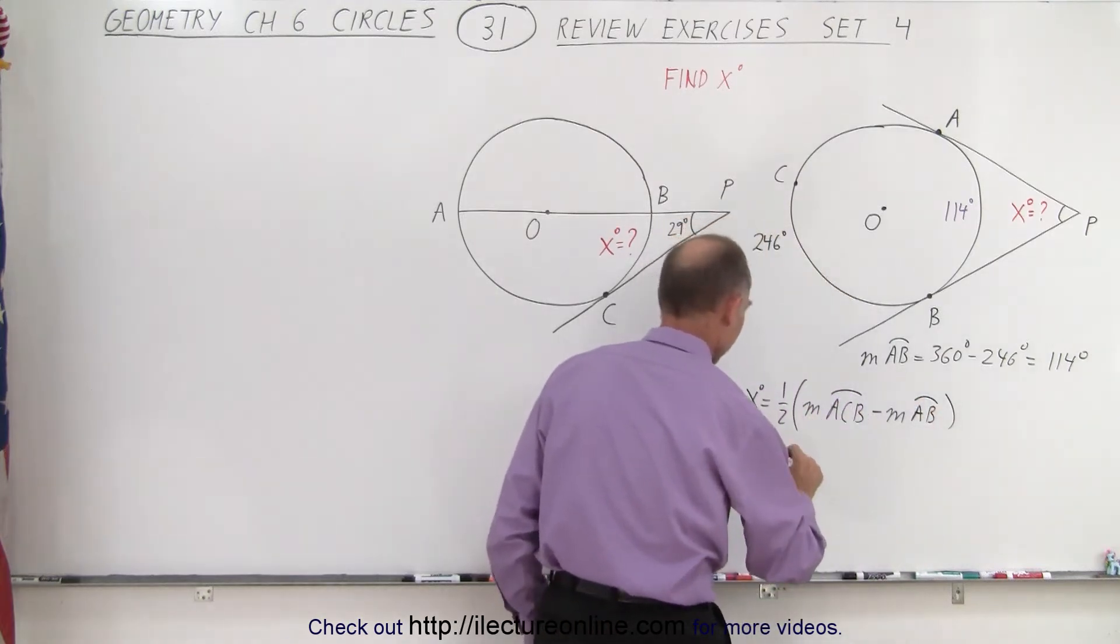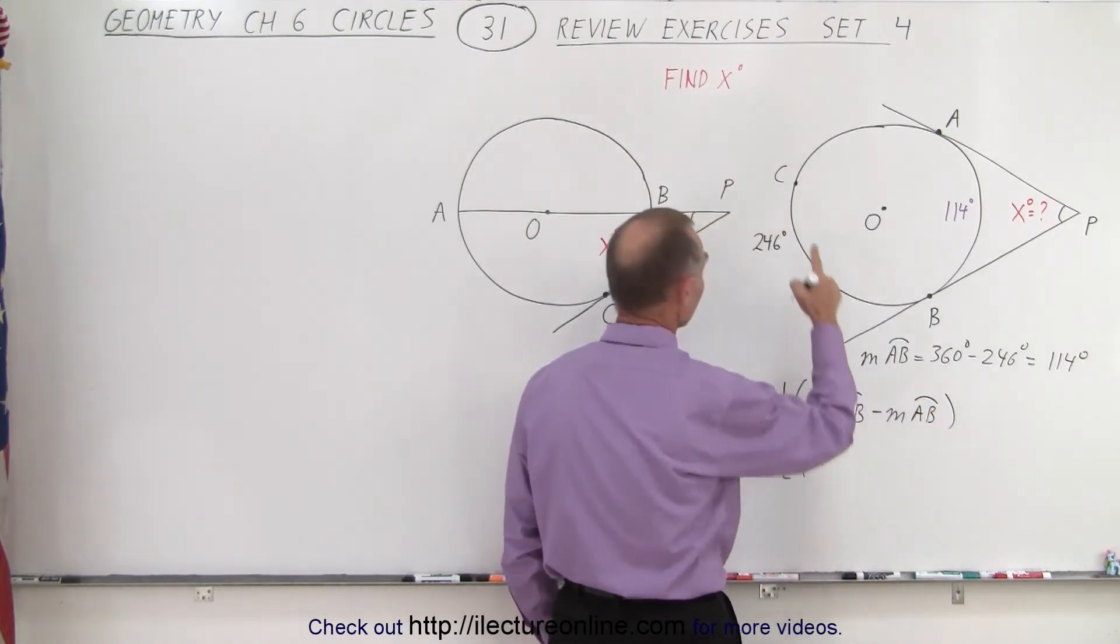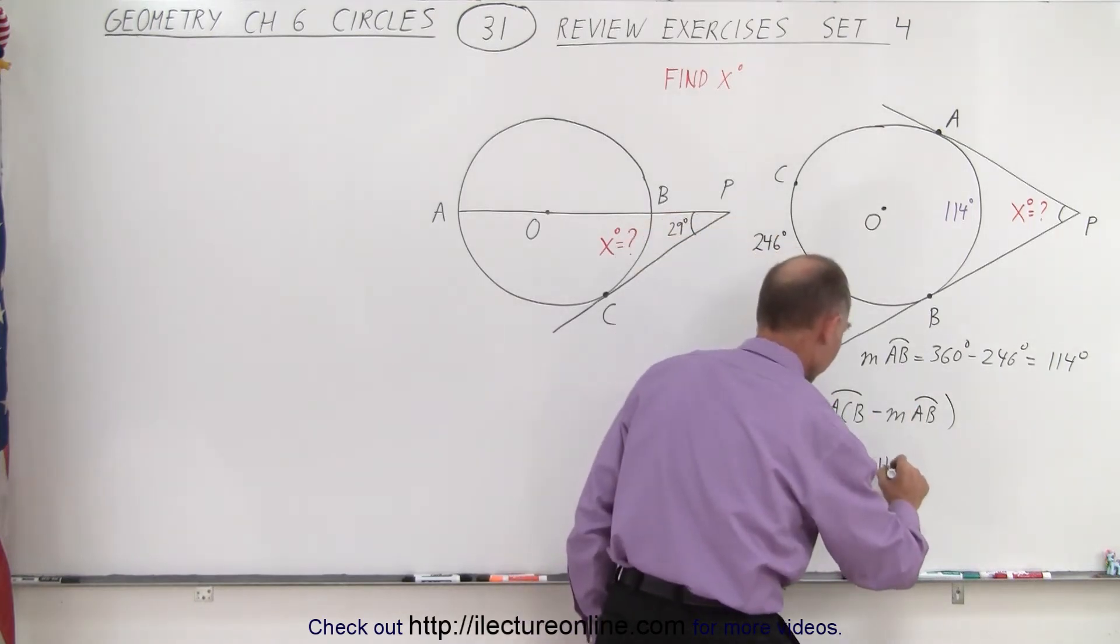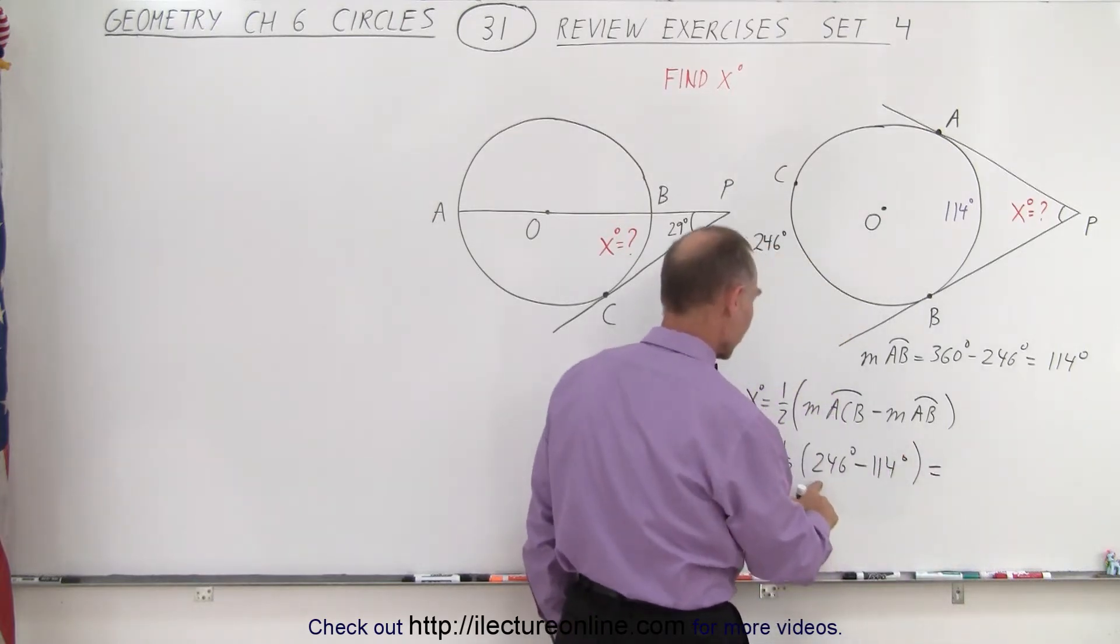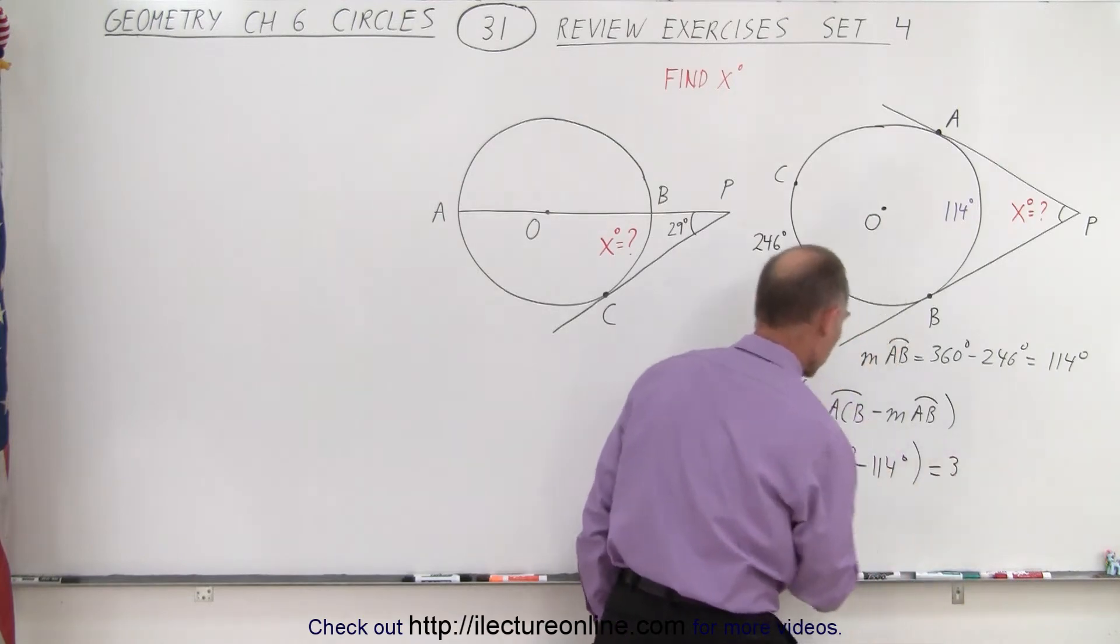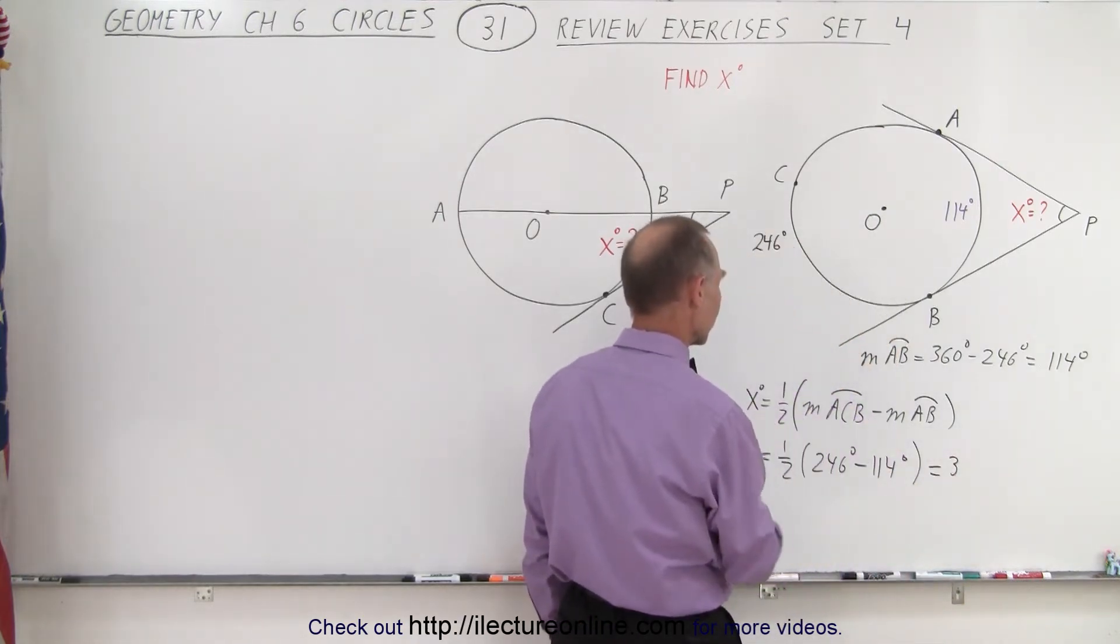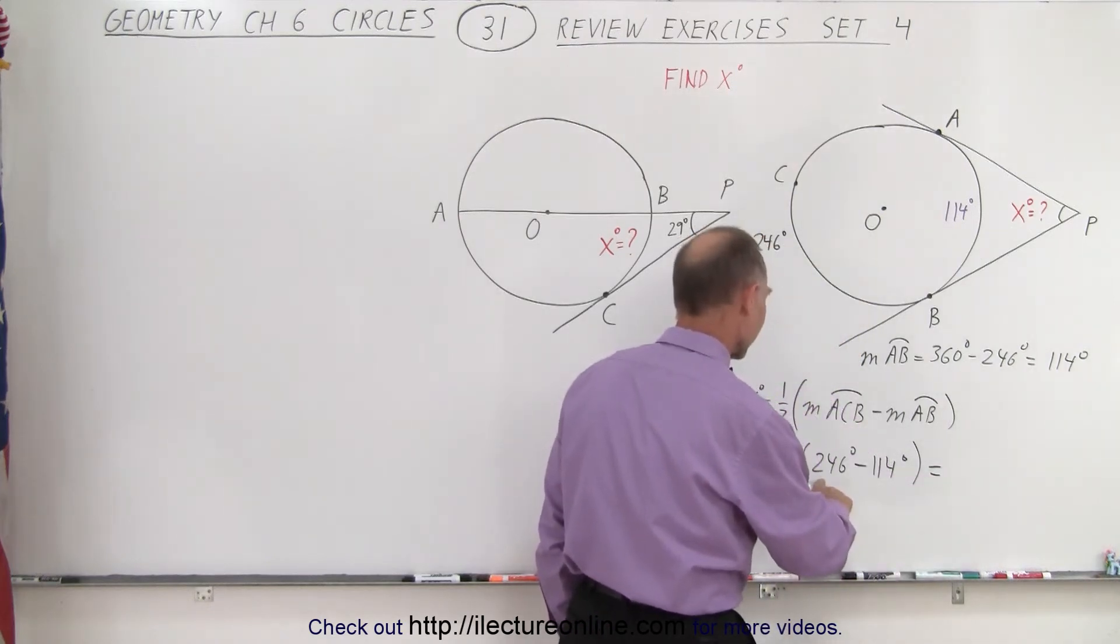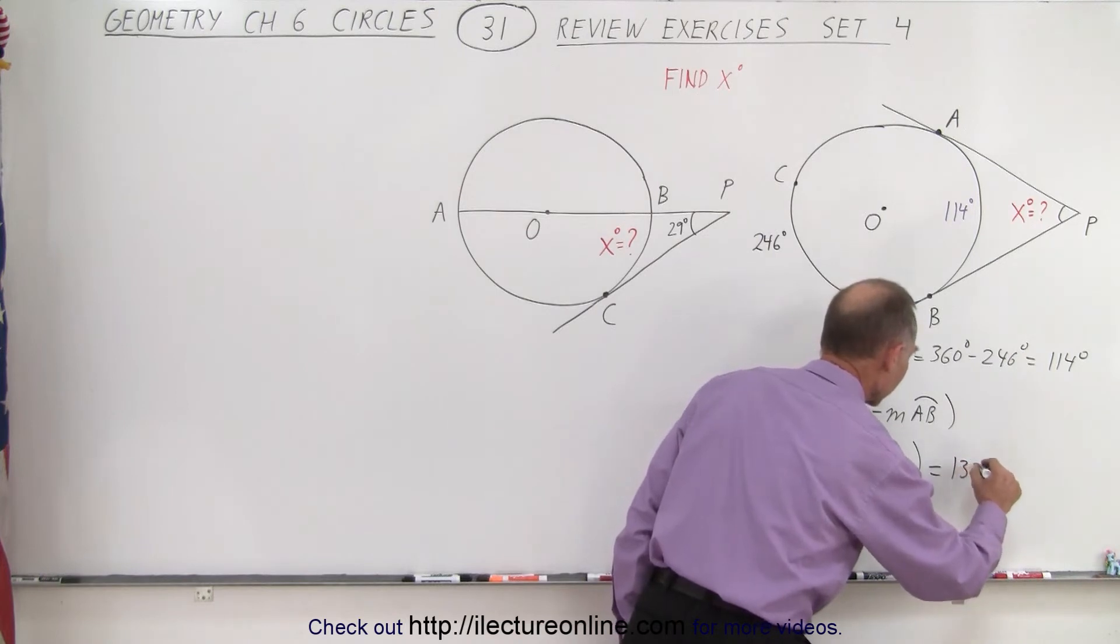Alright, that means that this is equal to one half times the measure on the outside is 246 degrees minus the measure on the inside which is 114 degrees. And so that would be 332. That would be 300 and, oh is that right? I'm wrong, not 300, going the wrong direction. Not adding, I'm subtracting. So it's 132 degrees.